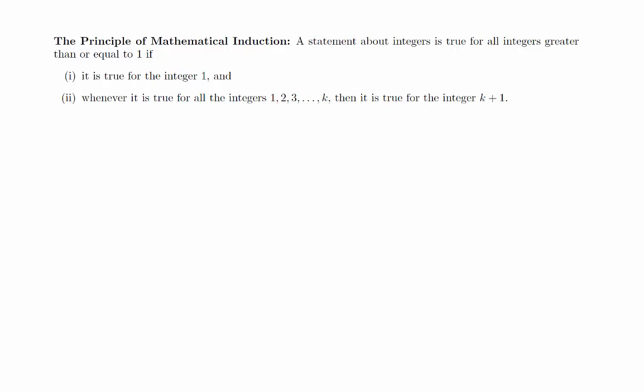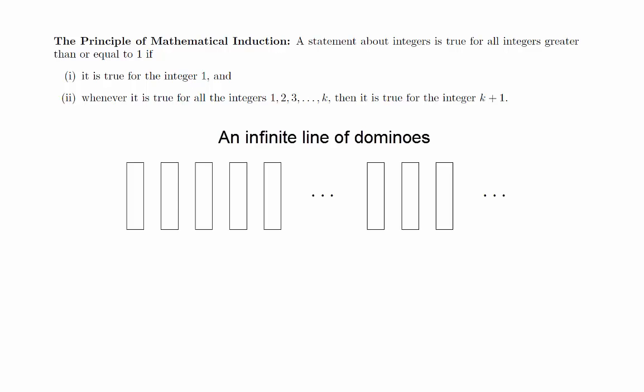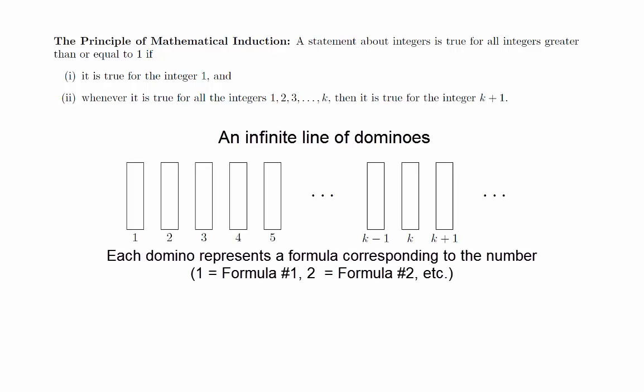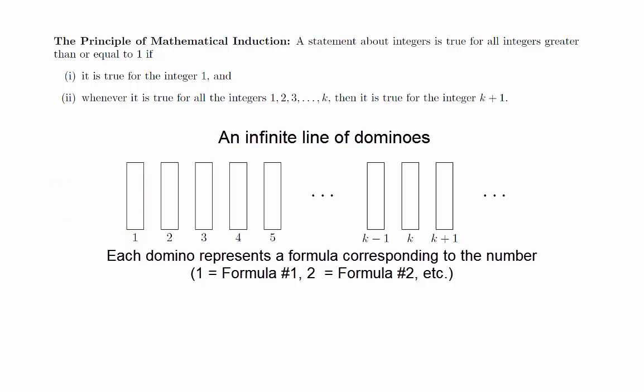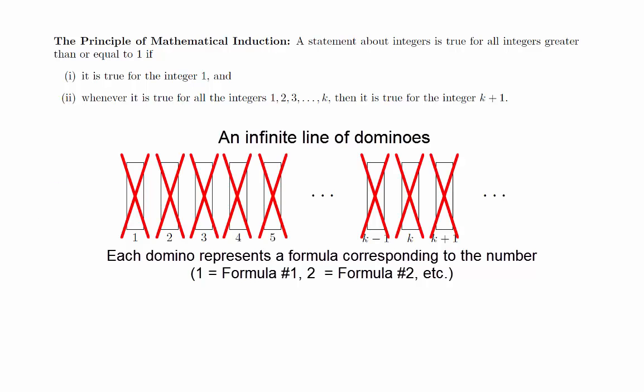To understand how this works, we will think about an infinite line of dominoes. We will label all the dominoes with positive integers, each one representing a formula we want to prove to be true. We will also imagine that knocking over a domino is like proving the statement to be true.